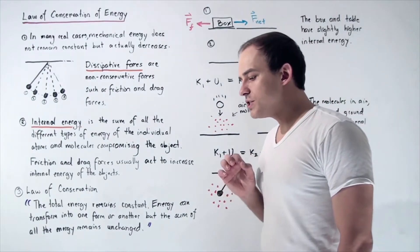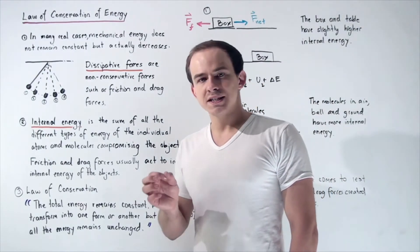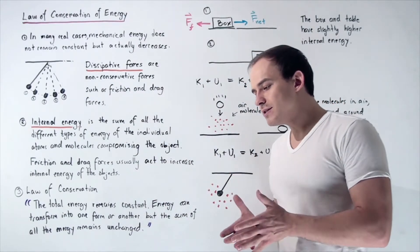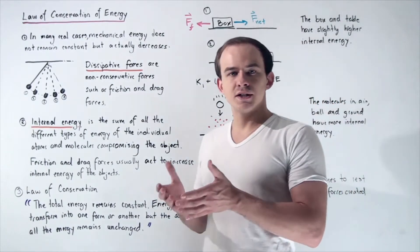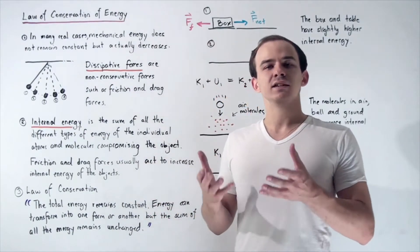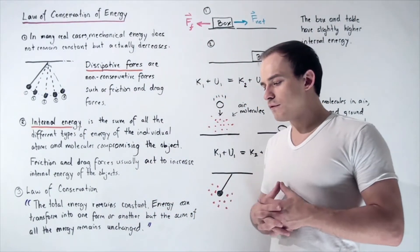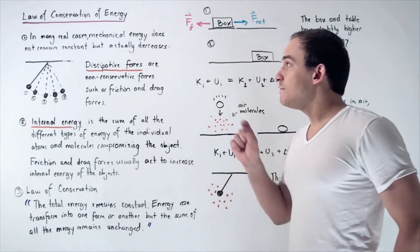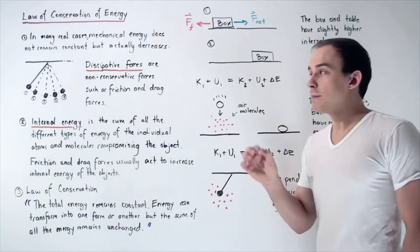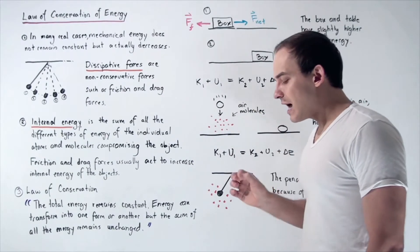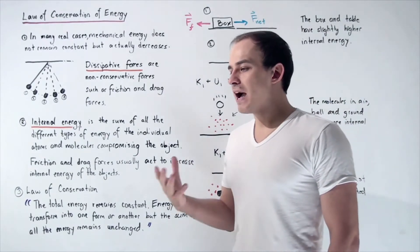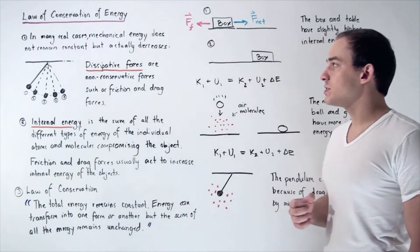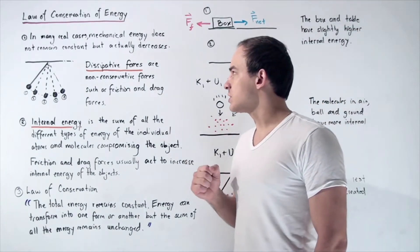As of now, when we spoke about the law of conservation of mechanical energy, we said that the reason mechanical energy is conserved is because we're neglecting non-conservative forces such as friction and drag forces. But in fact, in many real cases, mechanical energy does not remain constant — it decreases because of dissipated forces known as friction and drag forces.